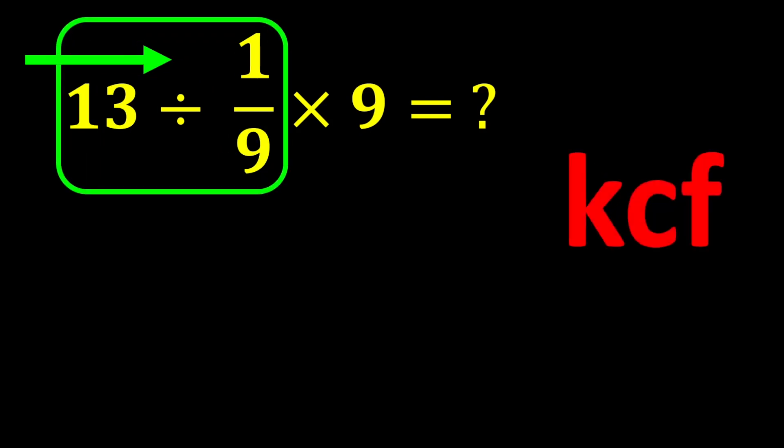To solve this part, we use the KCF rule. K stands for keep, C stands for change, and F stands for flip. The KCF rule is a simple rule for dividing fractions. According to this rule, we keep the first number as it is, change the division sign to multiplication, and flip the second number.